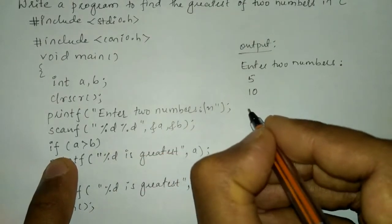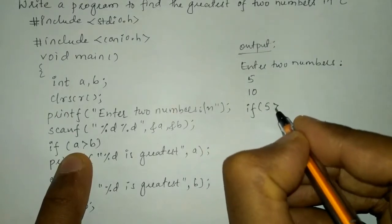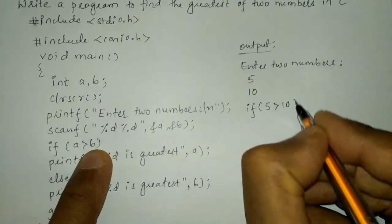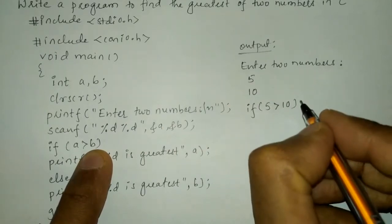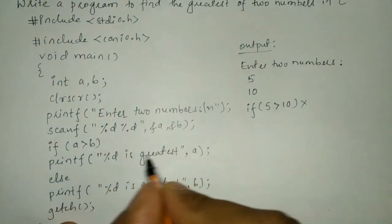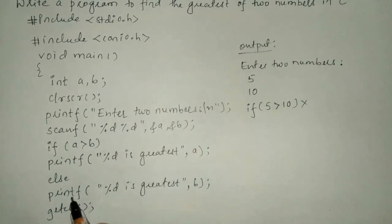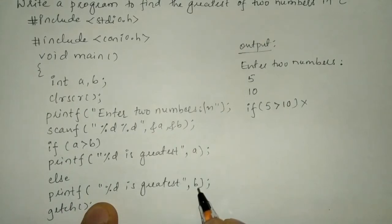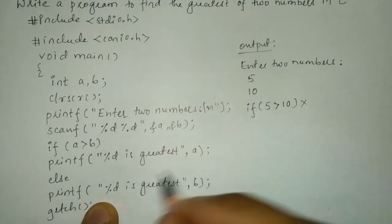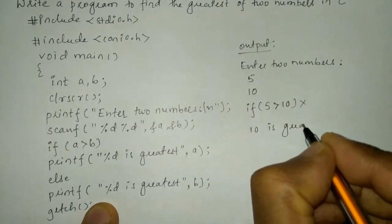So what is the condition? If a is greater than b, a is 5 and b is 10. So is 5 greater than 10? No, condition fails. Once the condition fails this statement will not get executed, control directly transfers to else part. So it is going to print percentage d. So here this format specifier holds the value stored in b. So b is 10. So it is going to display 10 is greatest.